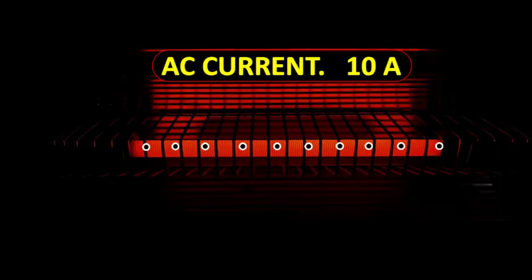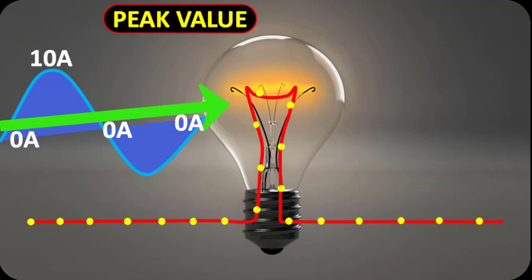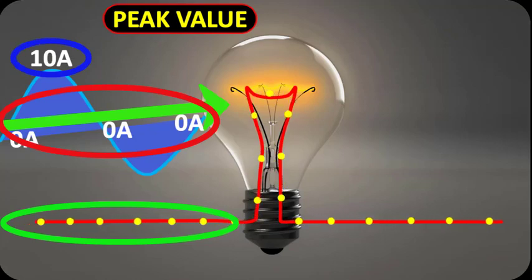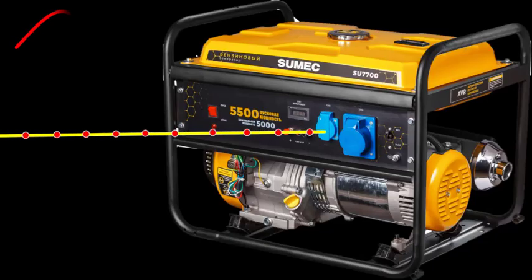This is due to the reason that for most of the time, the value of AC current over a cycle remains less than the peak value. The waveform of AC current produced by an electric generator is given by i equals i naught sine theta.